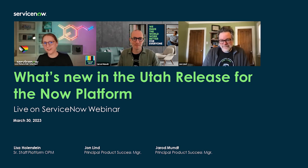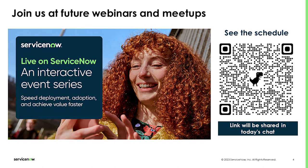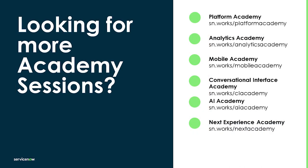Today we're speaking about things that are generally available. If we hint at something coming in Vancouver or a later release, just be sure not to make purchasing decisions based on that. This is part of a larger series of academy sessions. We have other webinars and meetups covering mobile apps, virtual agent, conversational interfaces, Next Experience, and many more topics. I'll have another slide at the end so you can sign up for all the other academies.